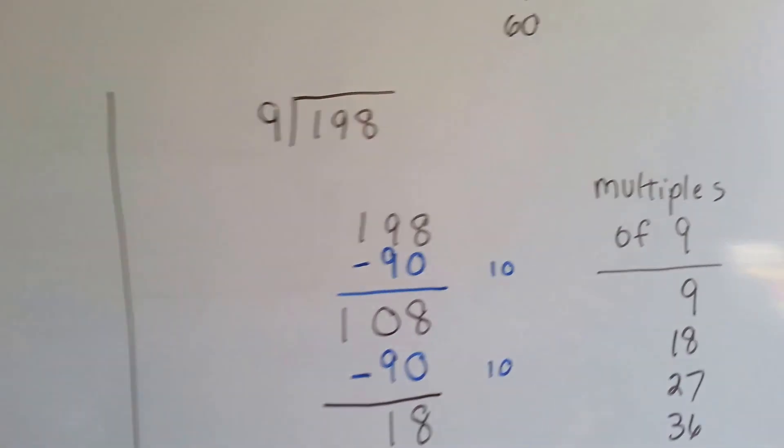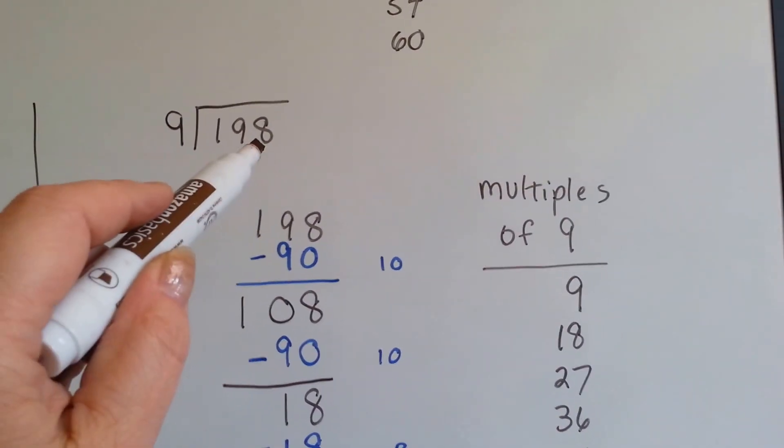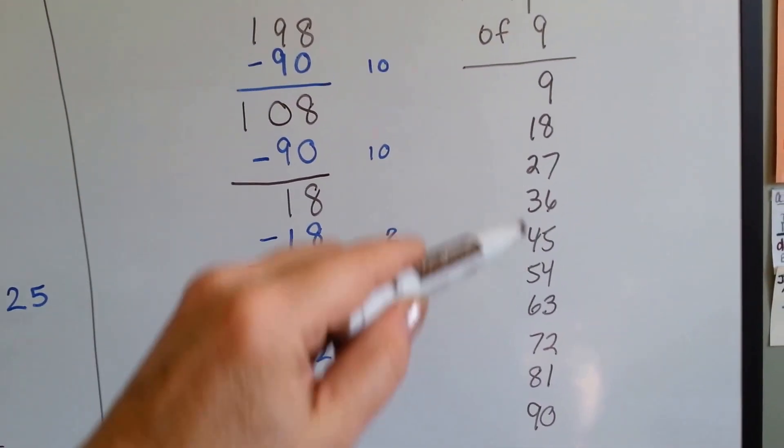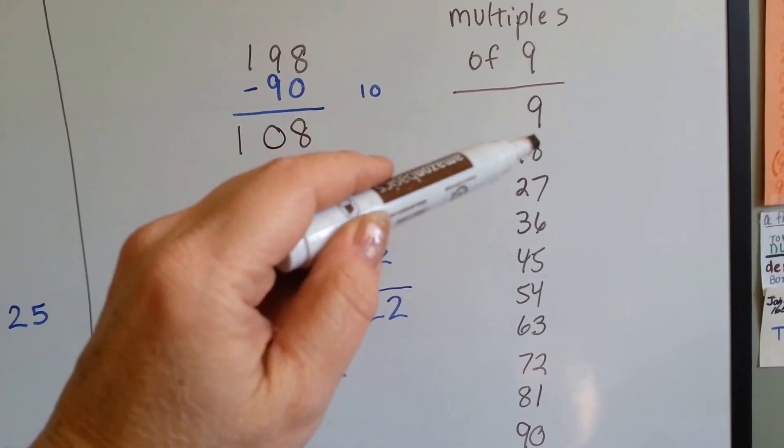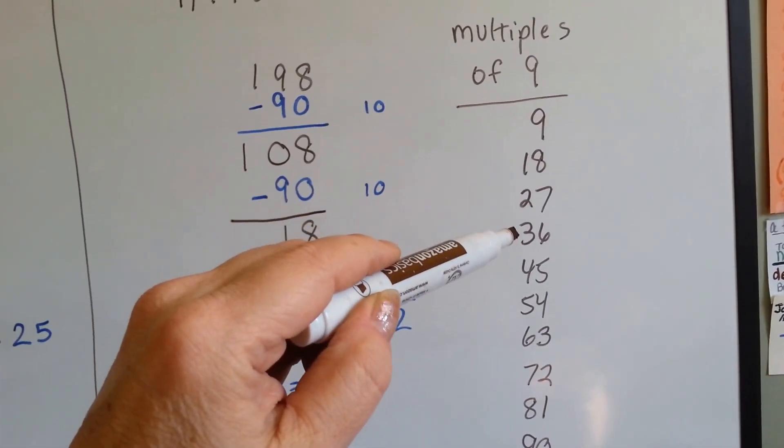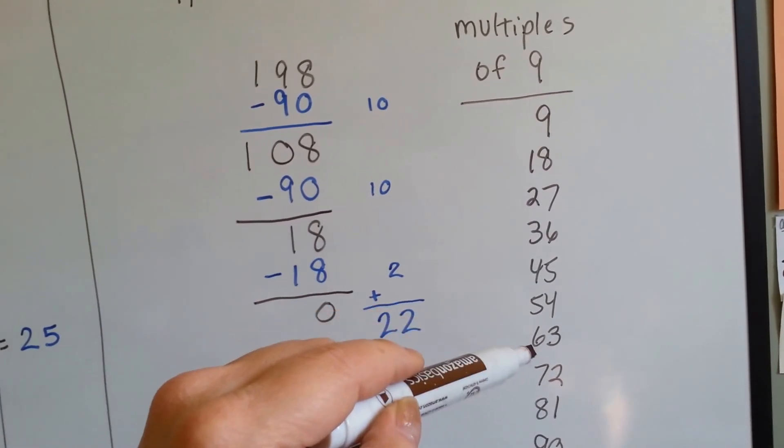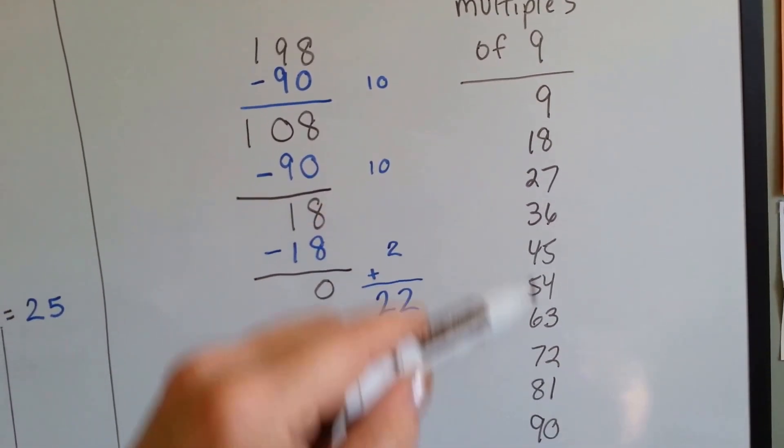So, let's look at 198 divided by 9. Here's the multiples of 9. Okay? That's 1. That's 2. That's 3. That's 4. That's 5. See? 9 times 6 is 54. 9 times 7. So, here's all the multiples. And we're going to start subtracting them from the 198.